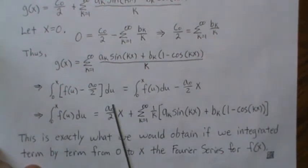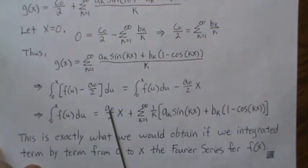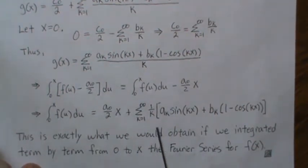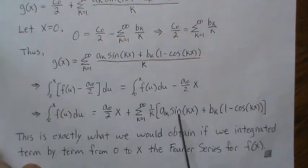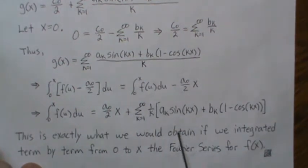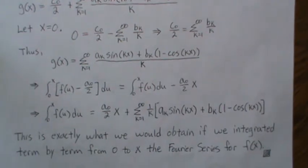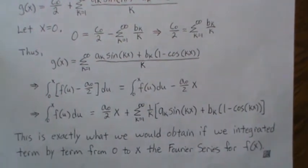So remember, on the first page, I said, if you integrate the a₀ over two, you get that x. And then if you integrate the cosine, you get the sine of this over k. And so it's the same. So you can integrate a Fourier series.